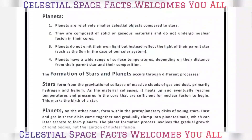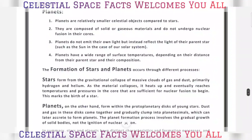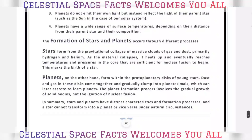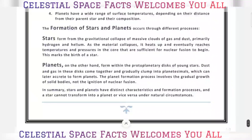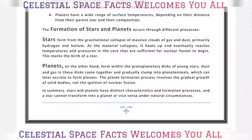Such as the sun in the case of our solar system, planets have a wide range of surface temperatures depending on their distance from their parent star and their composition. Stars form from the gravitational collapse of massive clouds of gas and dust, primarily hydrogen and helium. As the material collapses, it heats up.